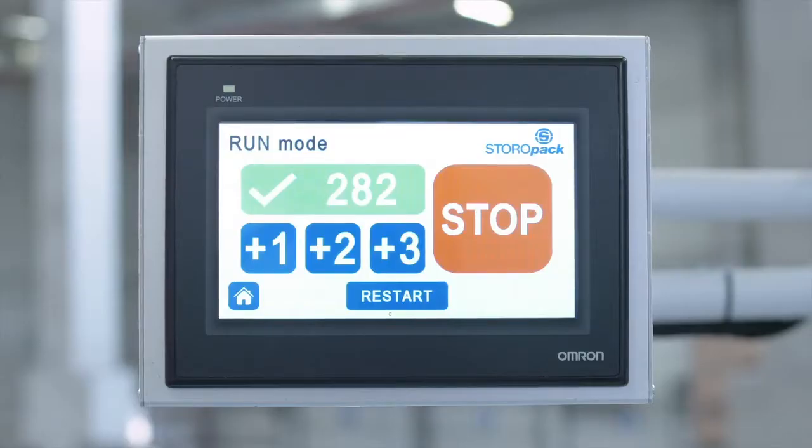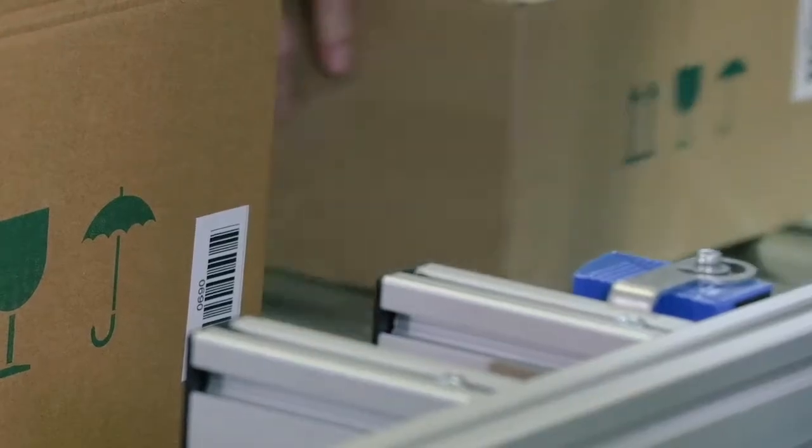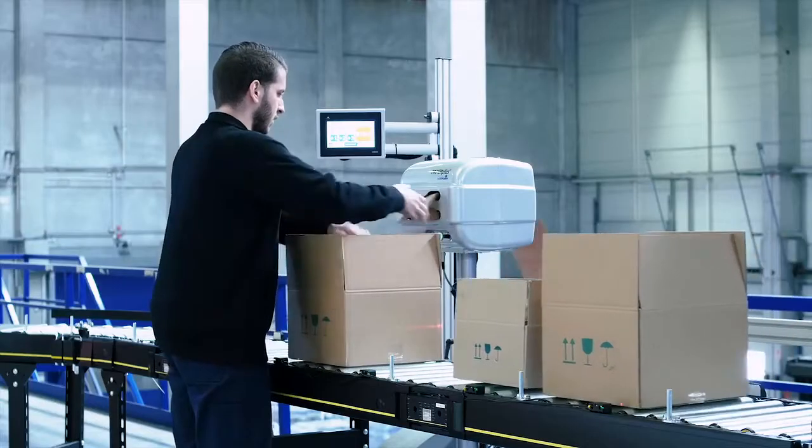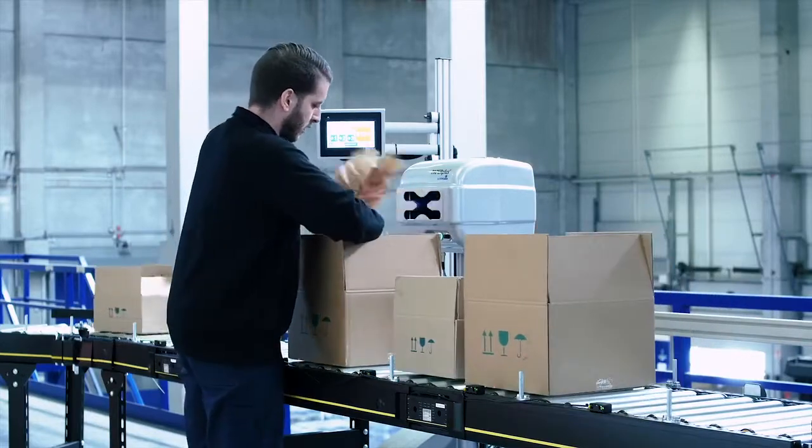PackLink calculations are based on data transmitted via a barcode scanner which reads a barcode that indicates the fill volume of the box and is located on the side of the box.